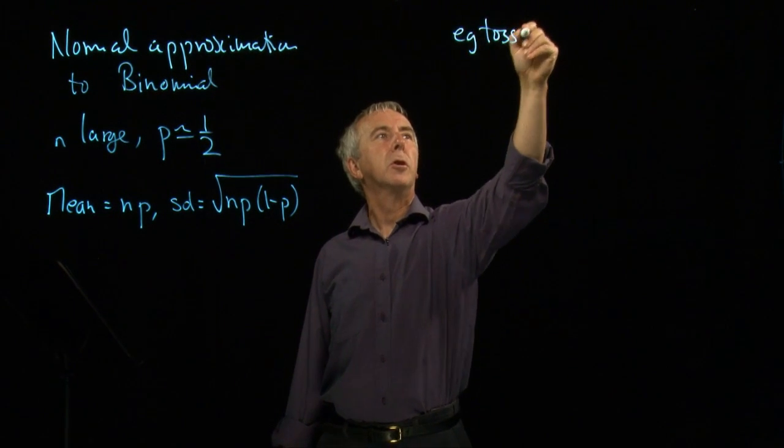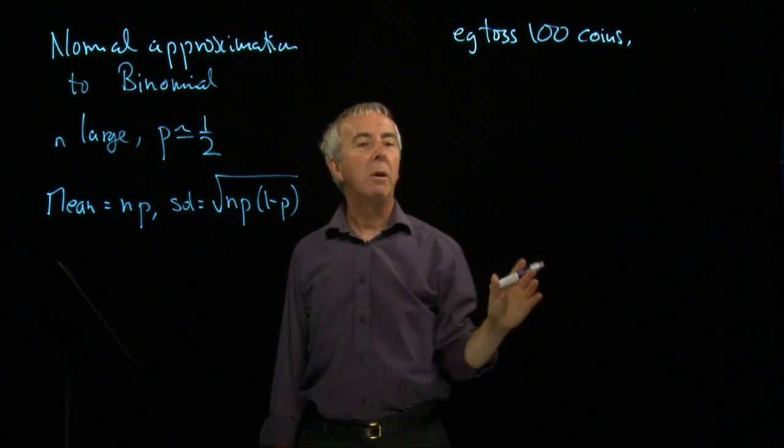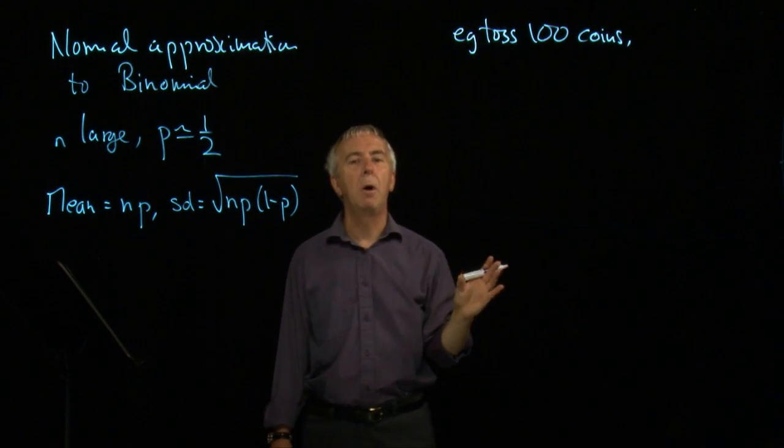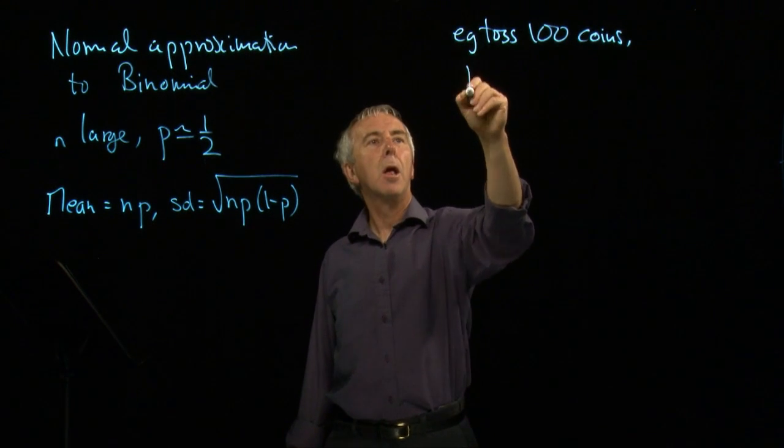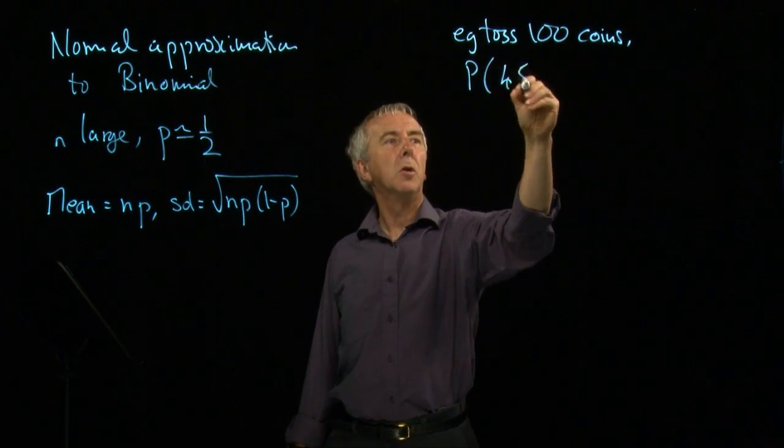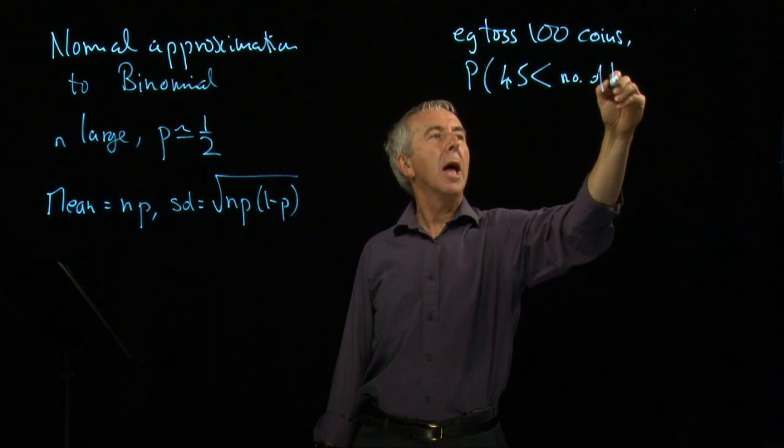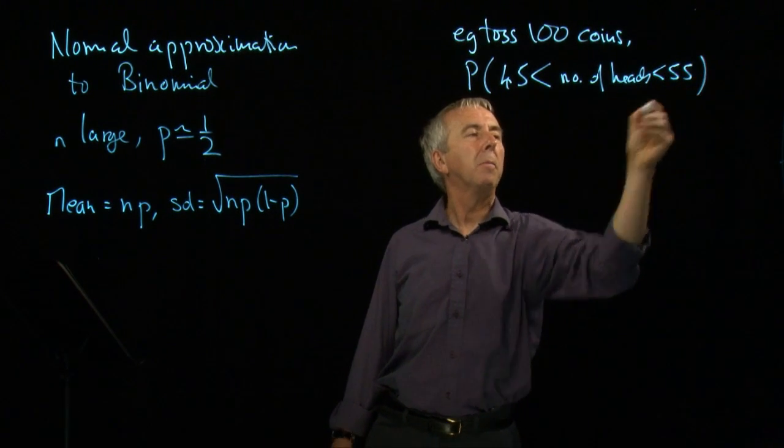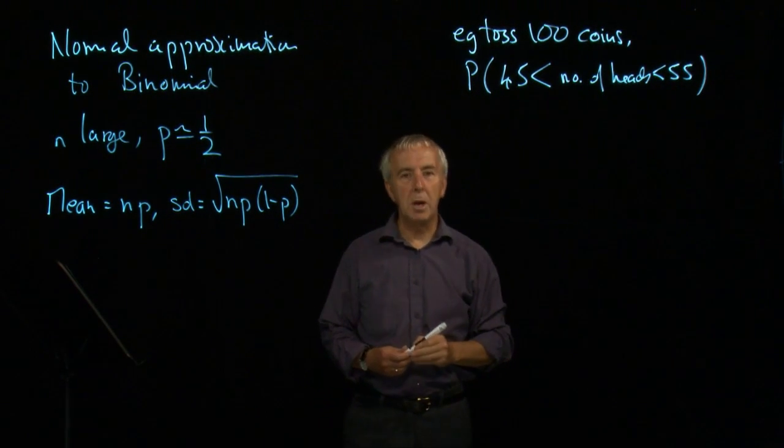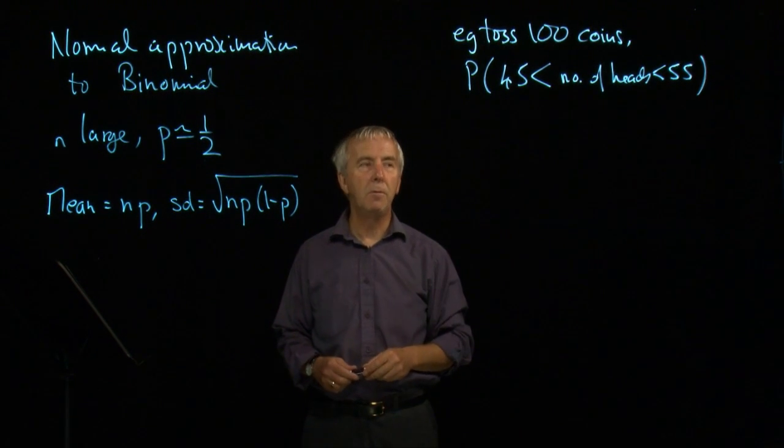Let's toss 100 coins, where in fact p is exactly equal to a half for each coin, and find the probability that the number of heads is between 45 and 55. And we mean strictly between, above 45, so anything from 46 to 54.